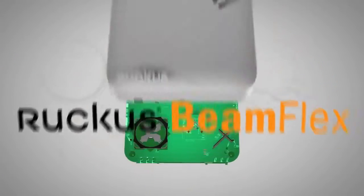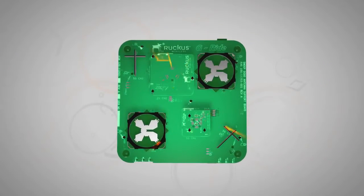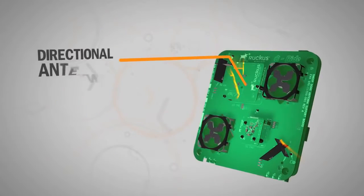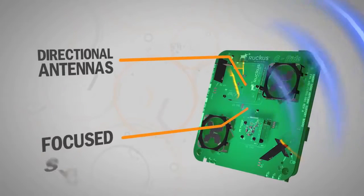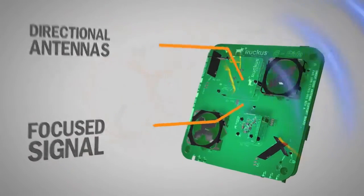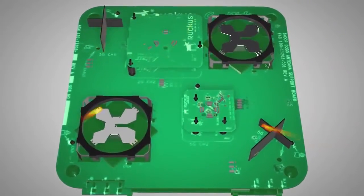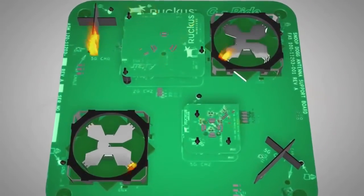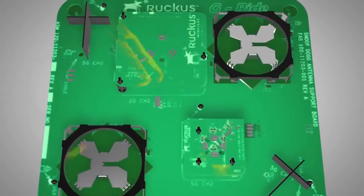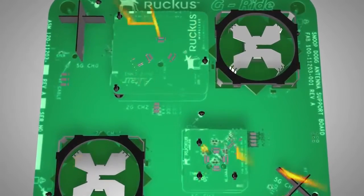Here's how it works. Through patented technology, BeamFlex automatically creates a directional Wi-Fi signal on the fly for every client. It does this by activating combinations of individual antenna elements, each working in concert to create the best possible signal path that yields the highest data rate.